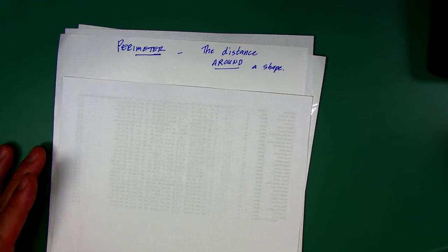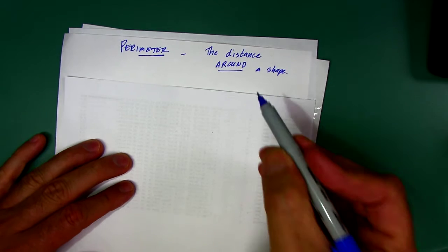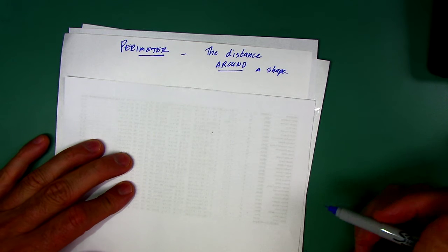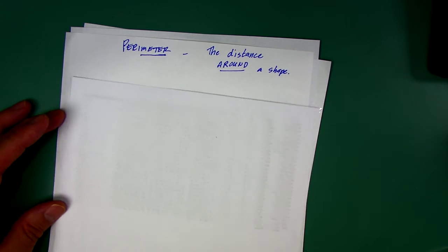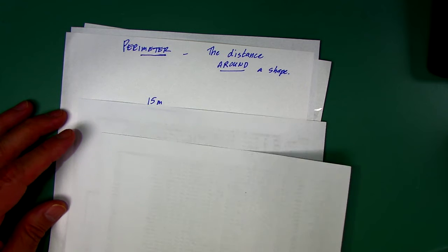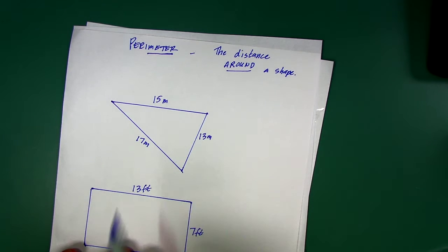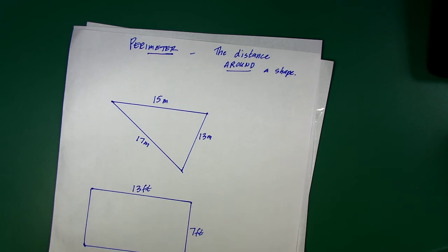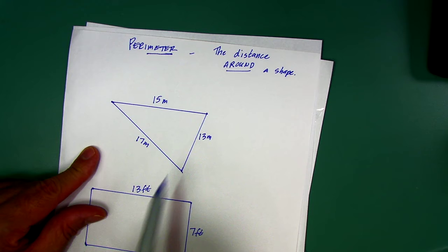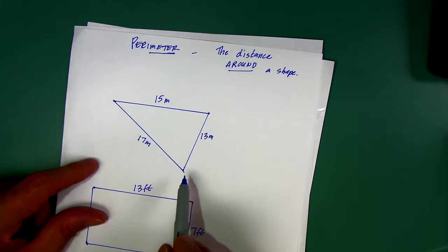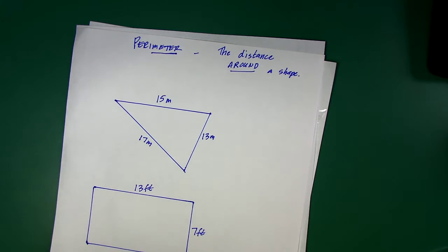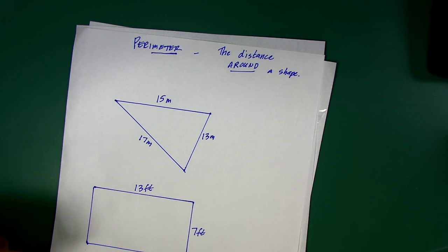What you're doing is measuring the distance around a shape. One way to look at it is to ask yourself, how far would an ant walk if you went around that shape? So here's a triangle. It's a scalene triangle because all three sides are different.